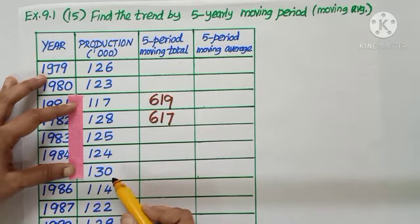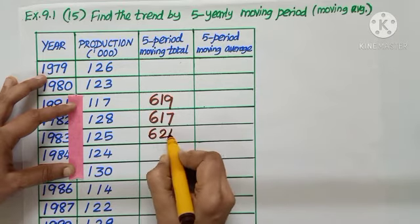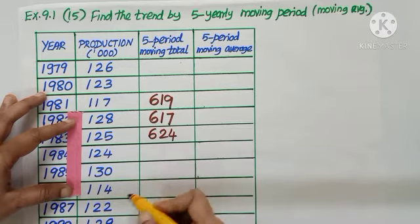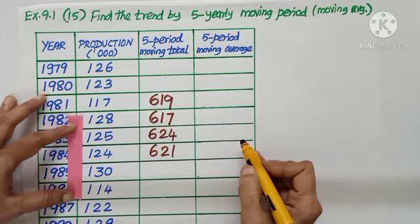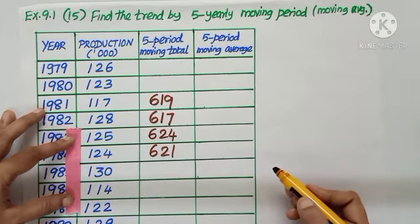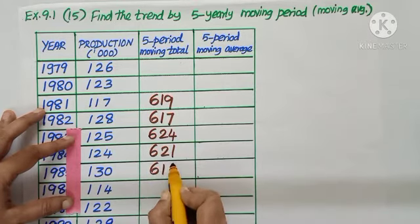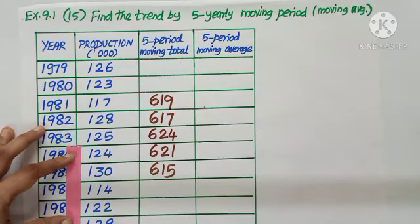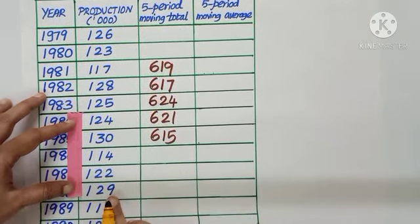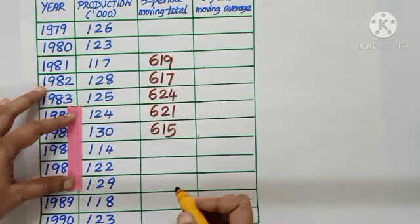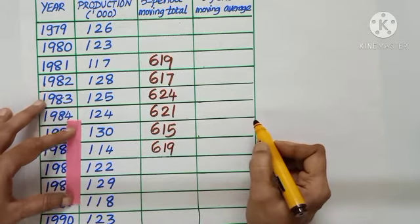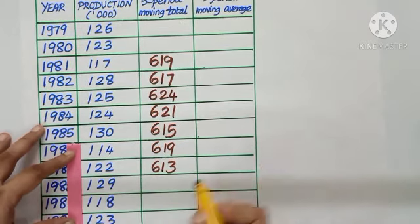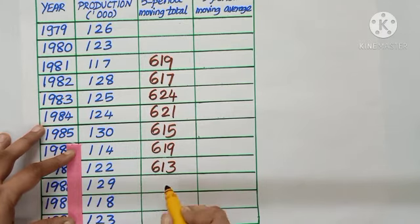Again leave one value, keep moving. Add these five. Continue calculating the totals. The answer is 621, then 615, then 619, then 613, and finally 606.